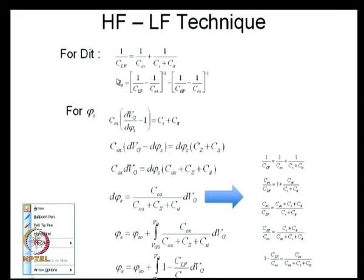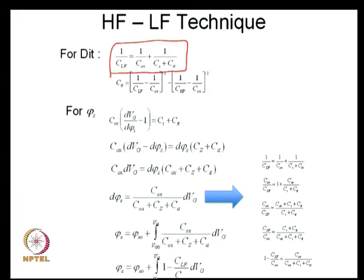To wrap up: there are multiple non-idealities in a CV system—ranging from fixed charge, interface charge, slow traps, channel charge quantization, polysilicon depletion, and measurement artifacts like series resistance or parallel conductance. There are systematic ways to extract parameters such as oxide thickness, substrate doping, fixed oxide charge, and interface trap density from CV measurements. Additional DIT measurement methods using both high-frequency and low-frequency CV will be discussed in the next lecture.